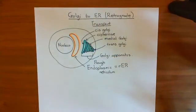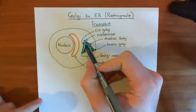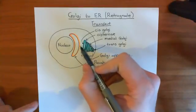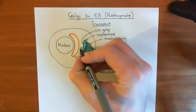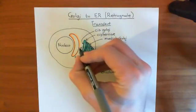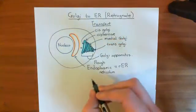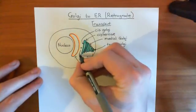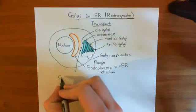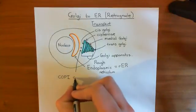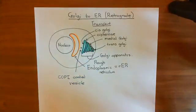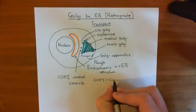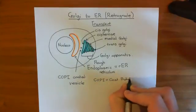We are looking at Golgi to ER, or retrograde transport, which means taking proteins from the cis-Golgi — the portion closest to the rough endoplasmic reticulum — and transporting them back to the ER. You create little vesicles that bud off from the cis-Golgi, are transported along microtubules back to the ER, and fuse with the ER membrane to release the protein. These vesicles are known as COP1-coated vesicles. COP1 stands for Coat Protein Complex 1.